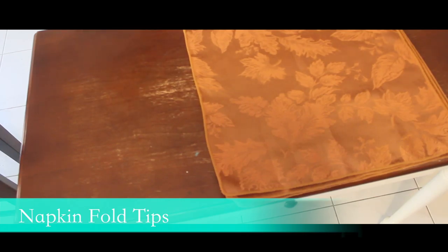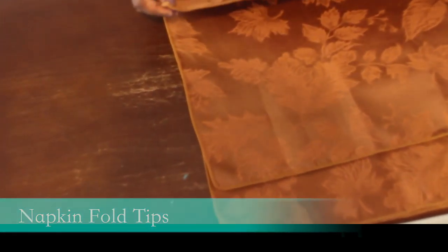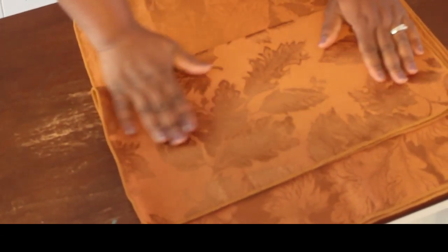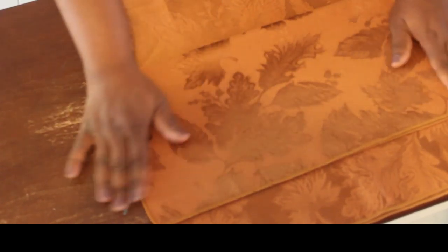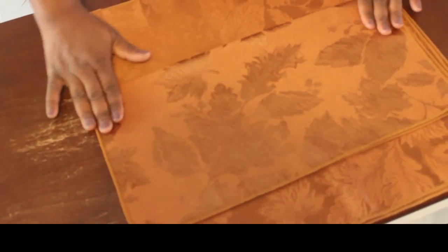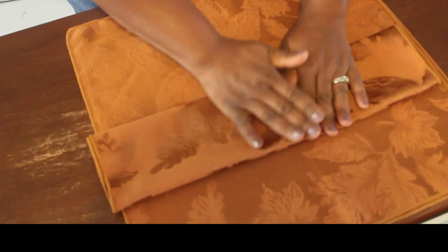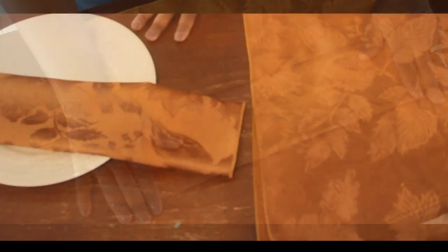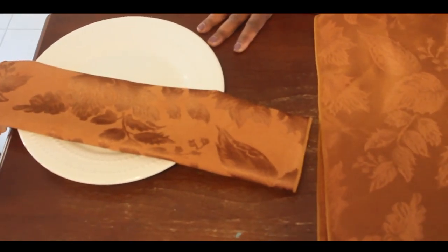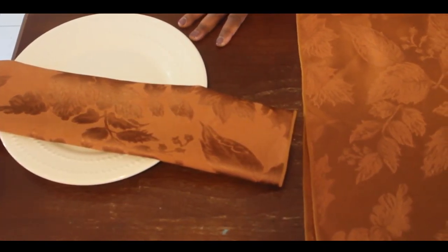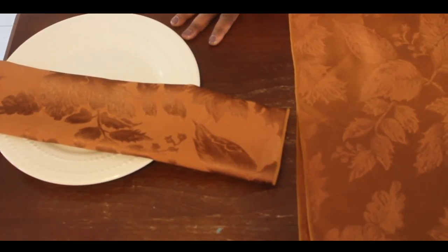I'm going to walk you through a couple of napkin folds that you can utilize for your tablescape. The first one is a pretty simple one. You'll fold your napkin in half and then crease it a little bit. You may want to iron it. This napkin doesn't need ironing because it's pretty thick and then we're going to fold it again.